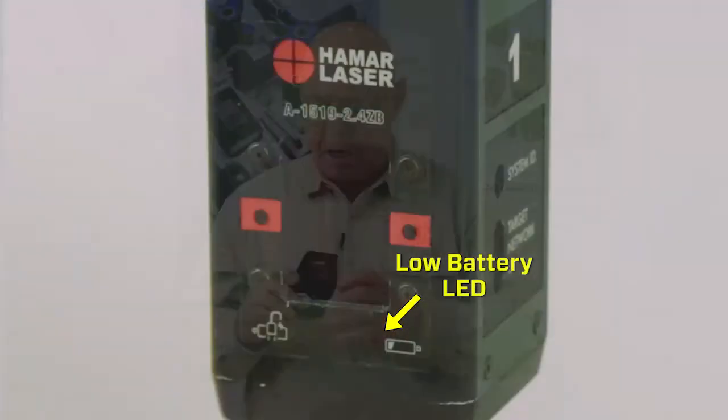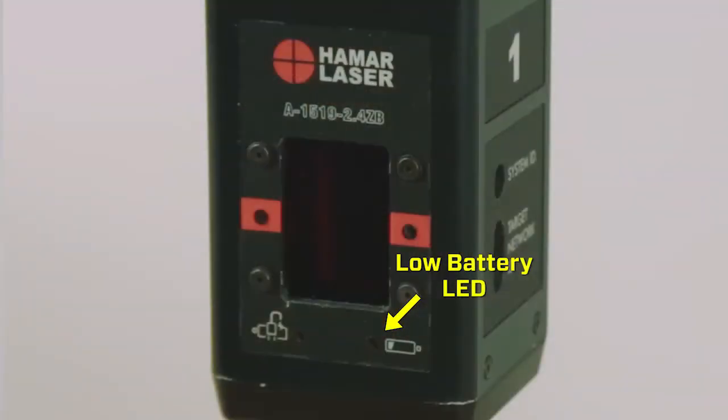When it reaches full charge, it'll shut the charging circuit off so you don't overcharge the battery and the light will go out. The other light is a low battery indicator. So if the battery gets low, this light will come on and indicate that you need to plug it in and charge it.